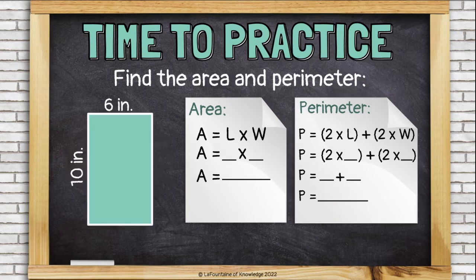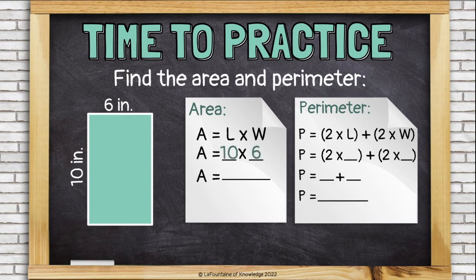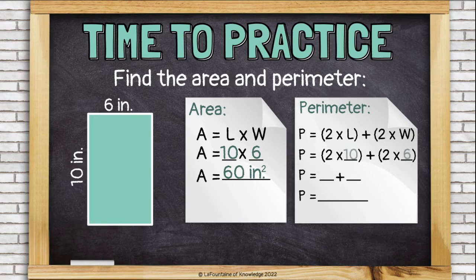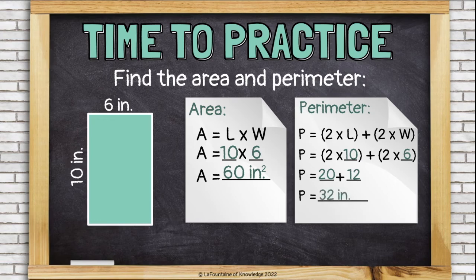Let's try another. This time we have a rectangle that is 10 inches long and 6 inches wide. So let's plug in our numbers to find the area. 10 times 6 is 60. The area is 60 square inches. For perimeter, once again, we'll plug in our length and width. And then we'll double them. 2 times 10 is 20 and 2 times 6 is 12. And finally, we'll add them together so that we have all four sides in our perimeter. That's 32 inches.